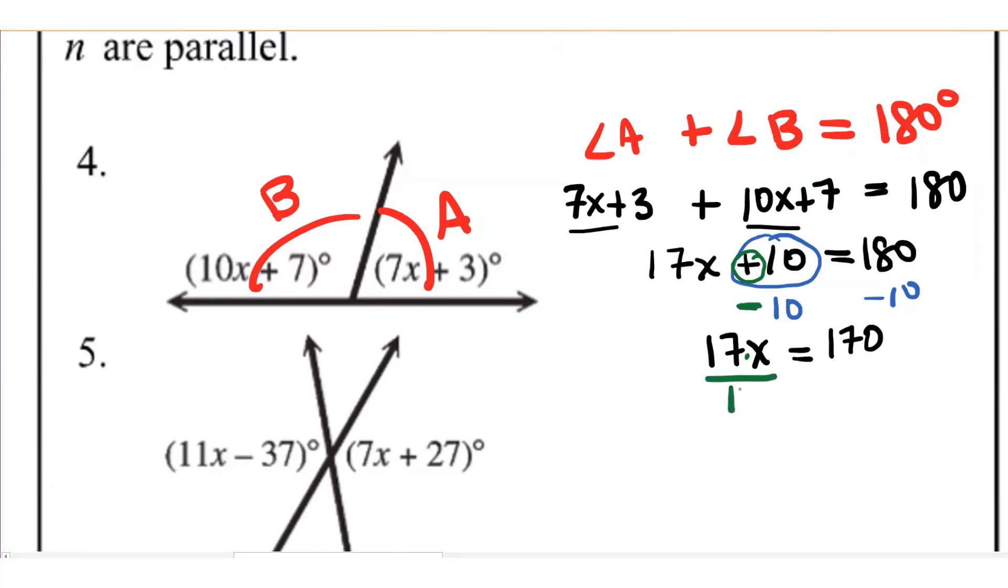So really I'm going to divide both sides by the 17, which gives me one x, but of course you don't have to write one. It's understood to be there. So we just write x on the left and 10 on the right. Okay.